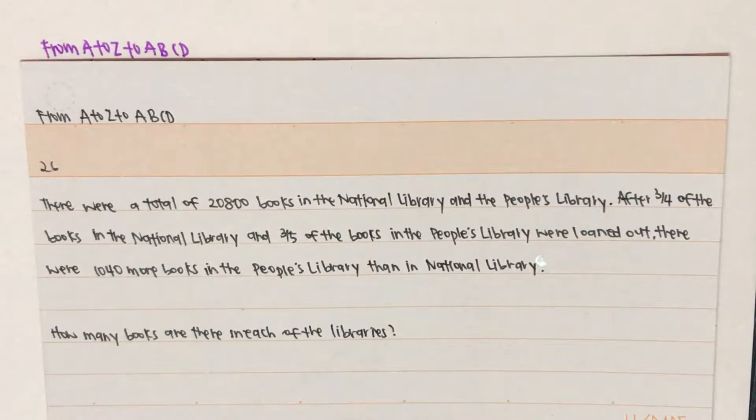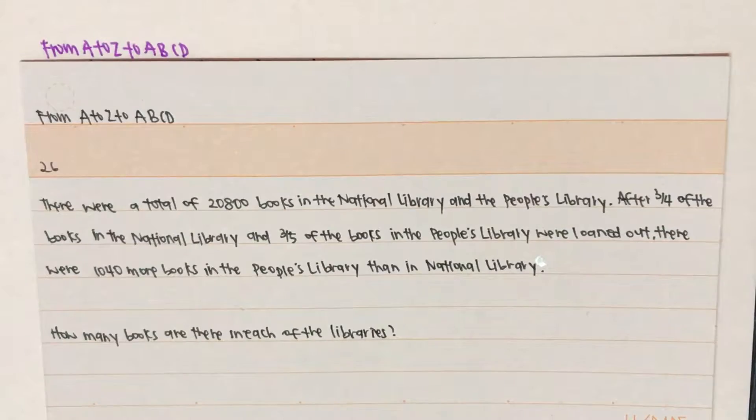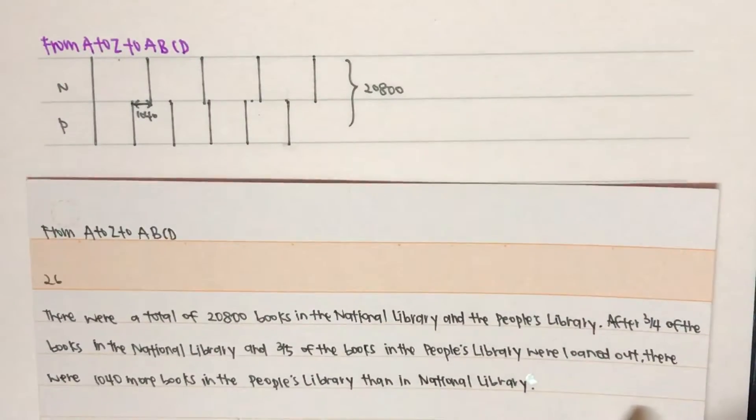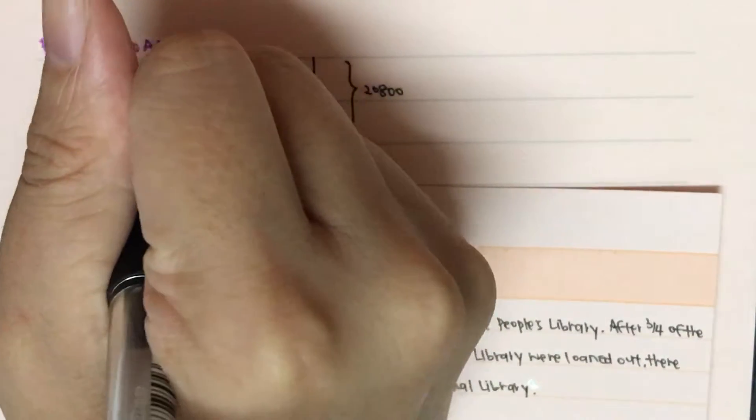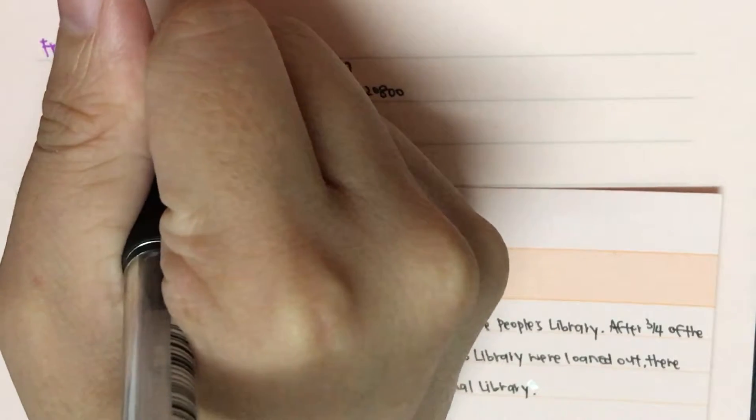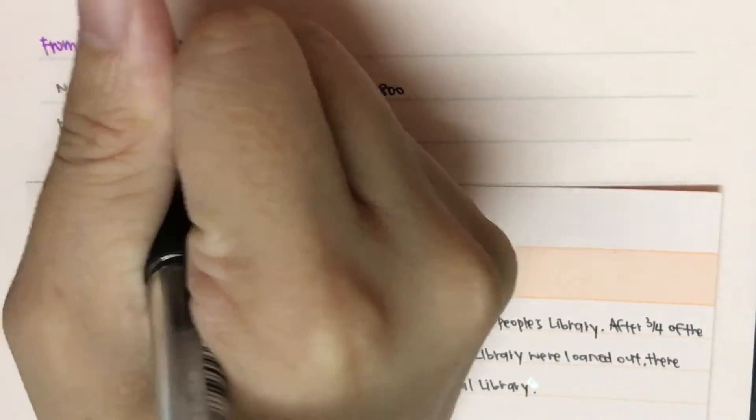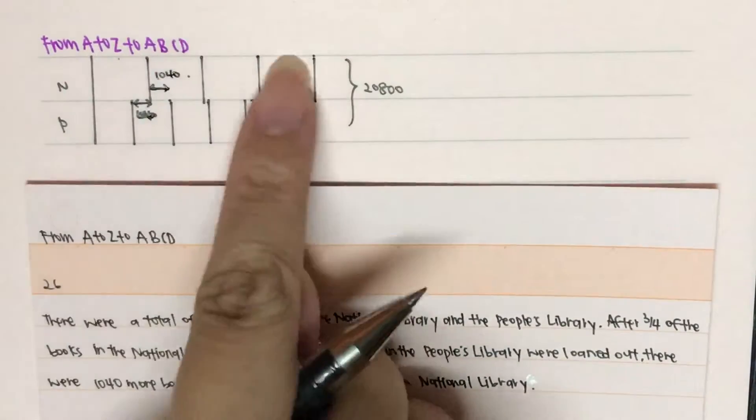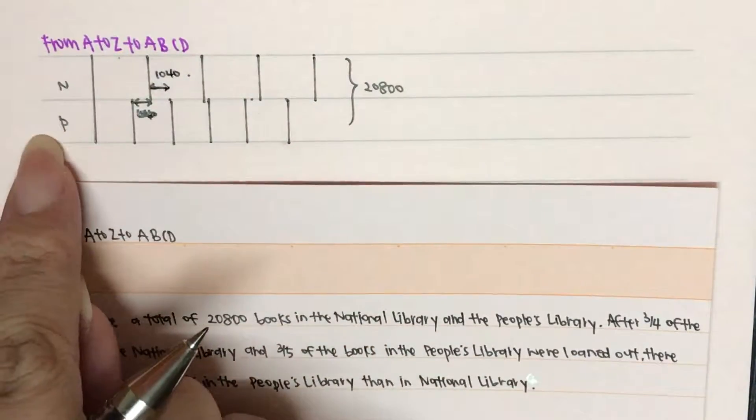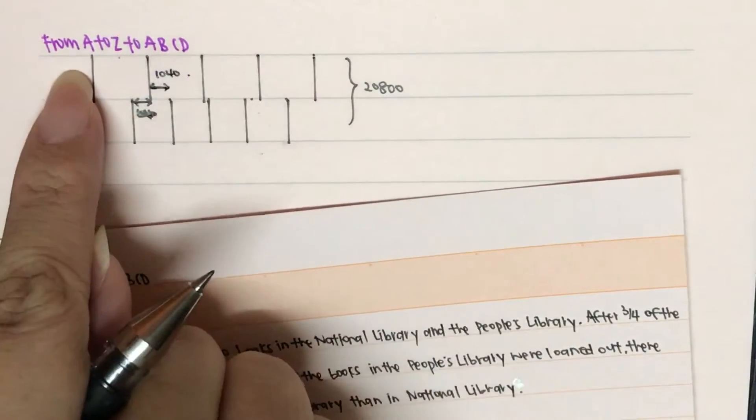So, for this question, you are supposed to draw something to visualize the question. Then, this is what you will end up drawing. In the National Library, when three units is gone, and in the People's Library, when three units is gone, three-fifths and three-quarters, I will have one-quarter and two-fifths left.